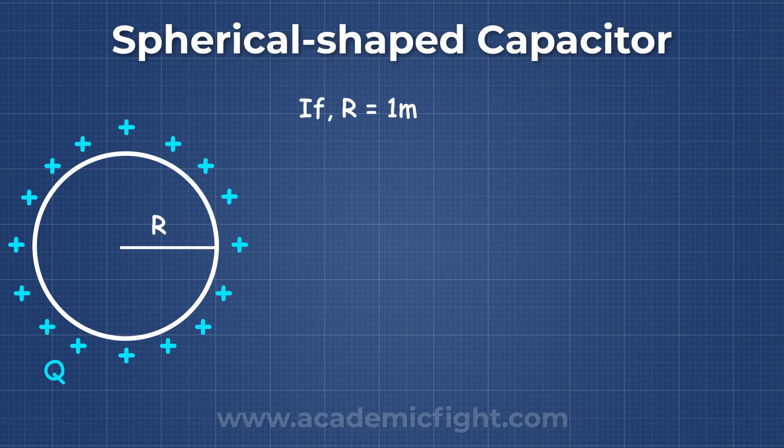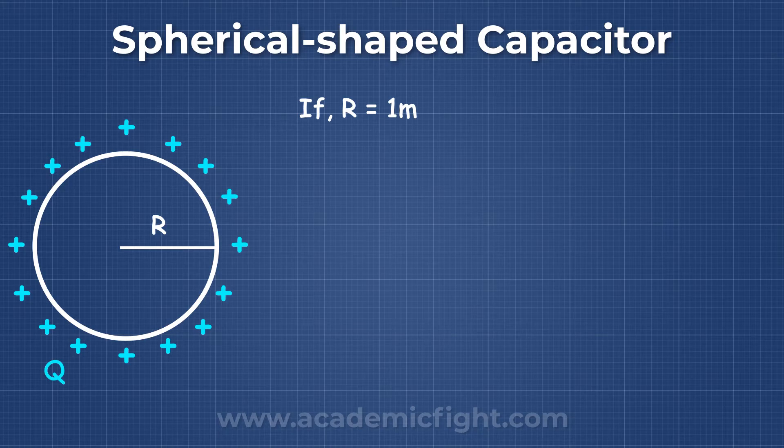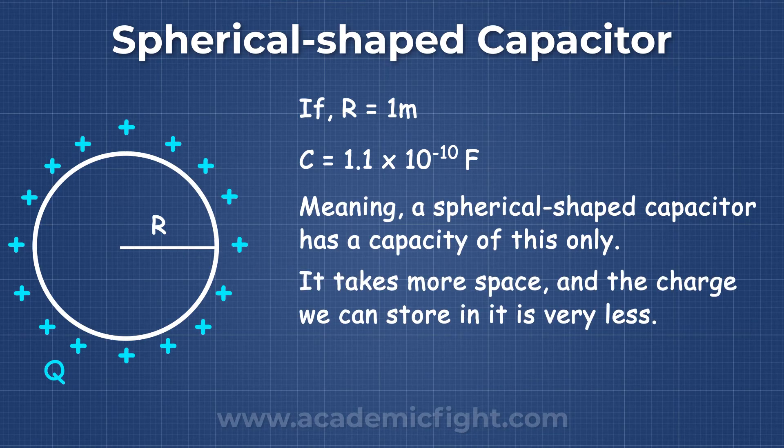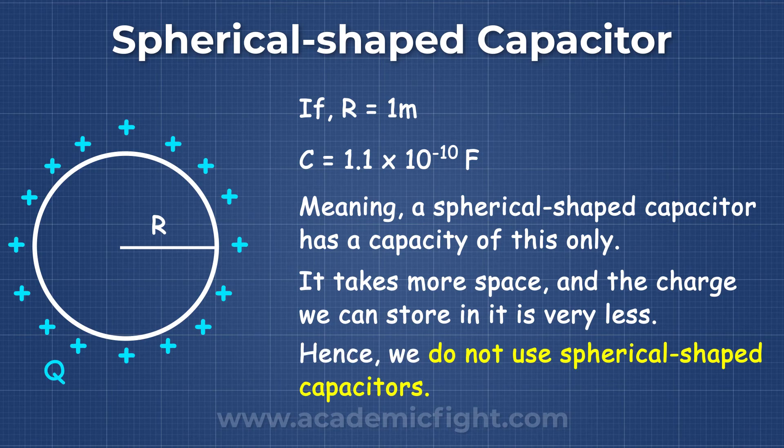When we put the value of R as 1 meter, we get the capacitance is equal to 1.1 × 10^-10 farads. Meaning, a spherical shaped capacitor has a capacity of this only. It takes more space, and the charge we can store in it is very less. Hence, we do not use spherical shaped capacitors.